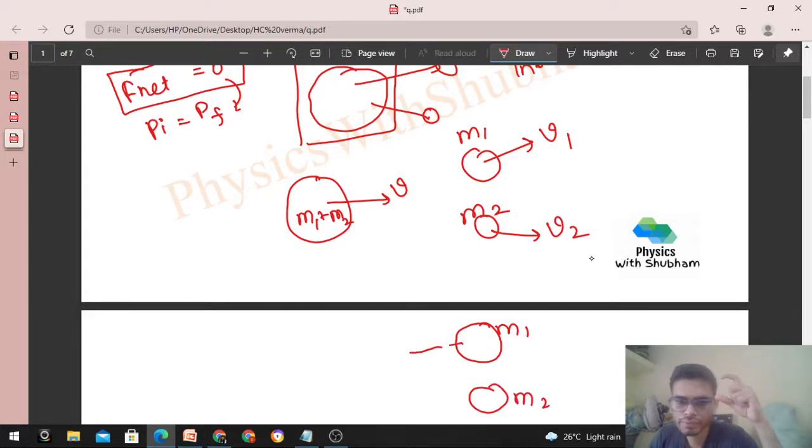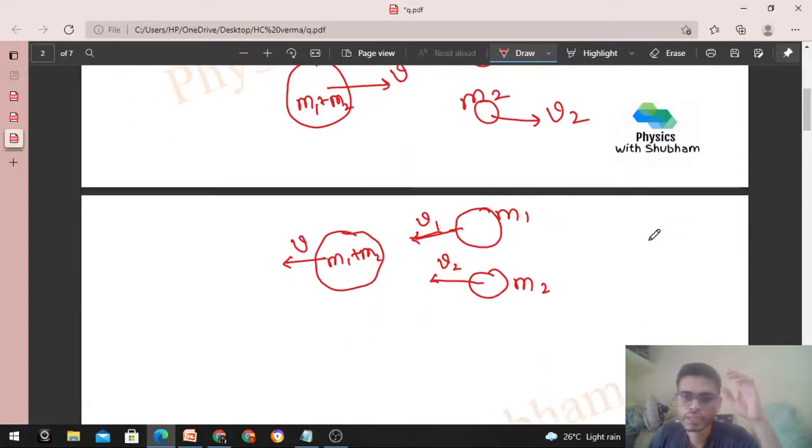It came like this with velocity v1 and this came with v2, and they form a block of mass m1 plus m2 which starts moving with velocity v in the backward direction. Now analyze this process - what is this?